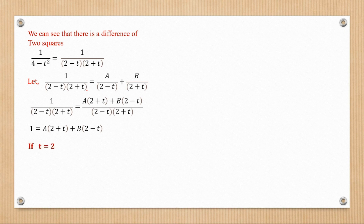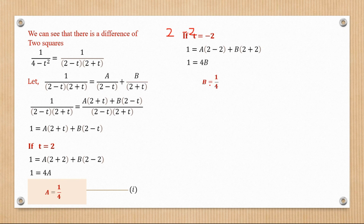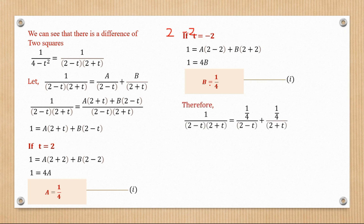To eliminate B, let t = 2: then 1 = A(2 + 2) = 4A, so A = 1/4. To eliminate A, let t = -2: then 1 = B(2 - (-2)) = 4B, so B = 1/4. Now that we have both A and B, our partial fractions are 1/4 · 1/(2 - t) + 1/4 · 1/(2 + t).